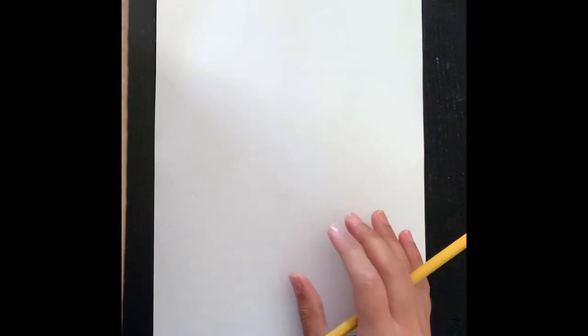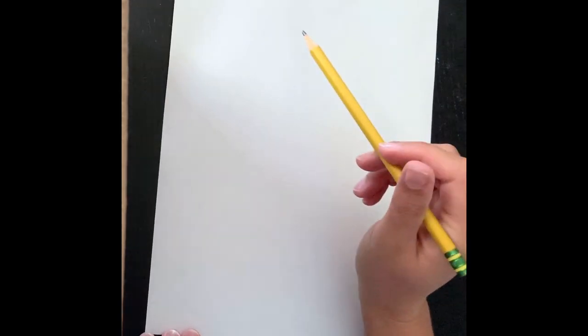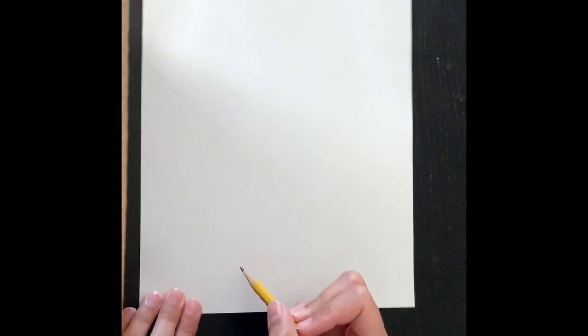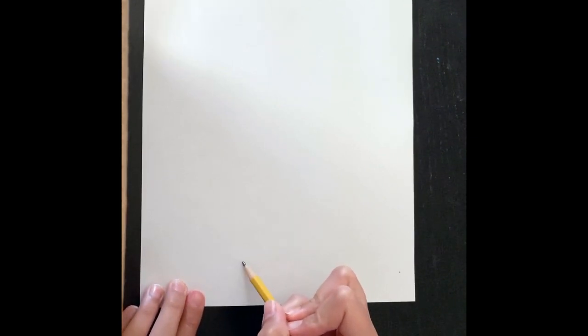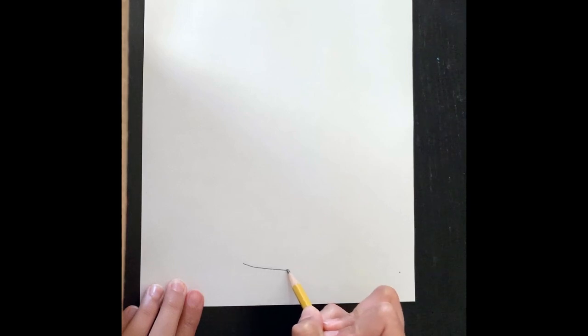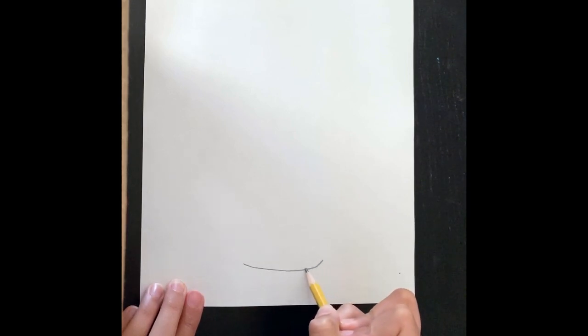Alright, so I have my piece of drawing paper and my pencil. The first thing I'm going to do is sketch out my vase for my sunflowers. So I'm going to be starting with the vase at the bottom of my paper, leaving a lot of room in the top of my paper for my sunflowers. So let's start with the bottom of our vase. A curved line right in the middle of our paper.